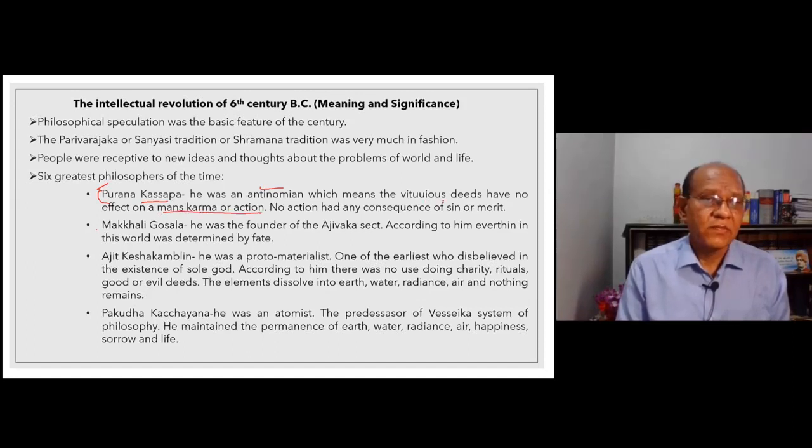Makkali Ghoshal was basically a believer in the determinism of extreme kind. His religious order later came to be known as Ajivika religion. He was a believer in the fatalism of extreme nature. It is very interesting that Makkali Ghoshal and Mahavir moved around as friends for six years, but later the differences emerged between these two great personalities and they parted company.